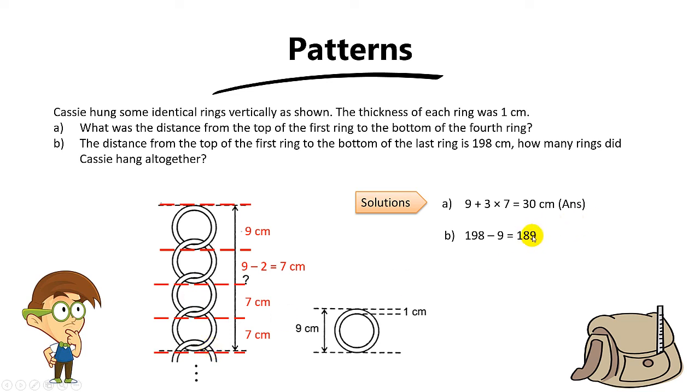Alright, so in this case where I take 189 divided by 7 I basically get 27 additional rings. Alright, so two things to do. Okay, this 27 is not the answer, because 27 is basically the number of additional rings. So to find the total number of rings, what should you do? You have to add the first ring, right? So 27 plus 1. The answer is 28 rings.